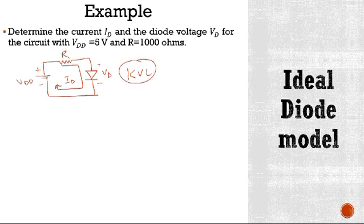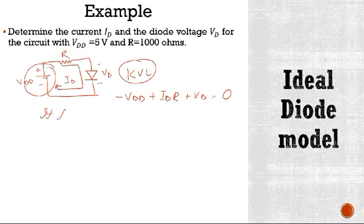And what will be the equation of KVL here? We'll start from this point. It will be minus Vdd plus Id R plus Vd is equal to 0.